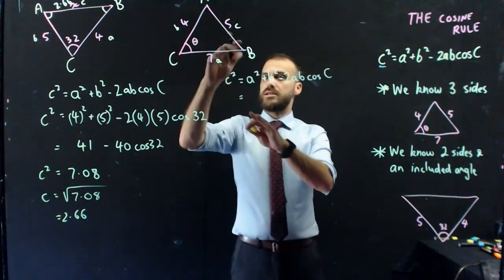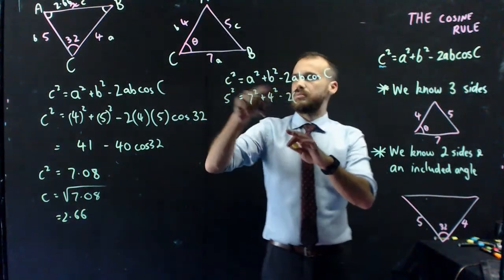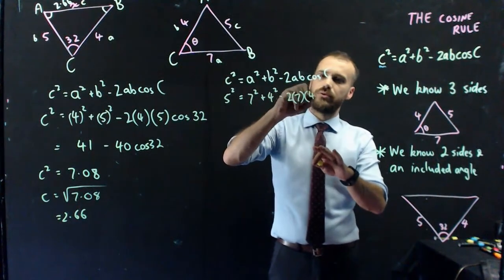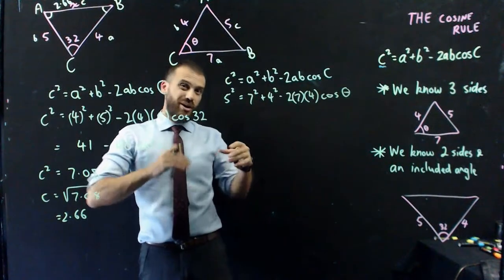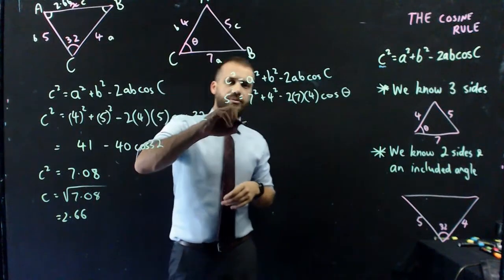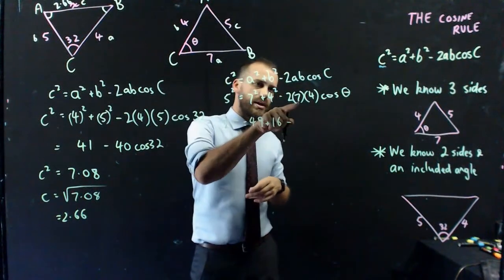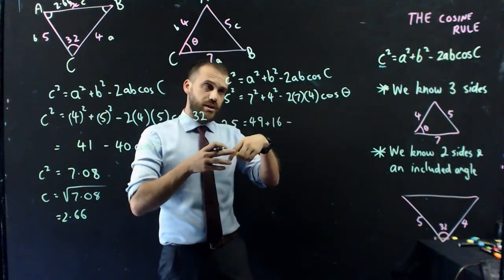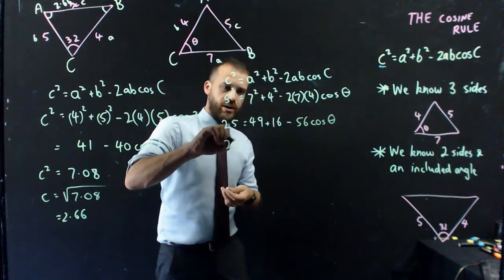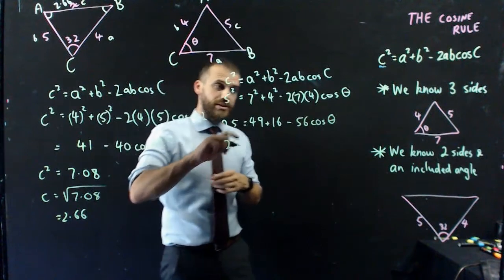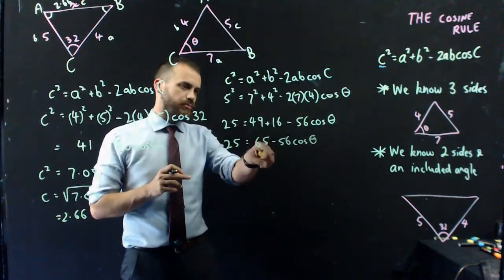And now, c is 5. So 5 squared equals a squared, which is 7 squared, plus b squared, which is 4 squared, minus 2 times a, which is 7, times b, which is 4, cosine the angle I don't know. So now, now that I've got all these numbers in here, I need to rearrange it for theta. I might just simplify things down a little bit before I do that. So 5 squared is obviously 25. I've got 49 here, plus 16, minus 7 times 4 is 28, times 2 is 56. 25. 49 plus 16, that must be like 65, minus 56 cos theta. So now it says 25 equals 65 minus 56 cos theta.